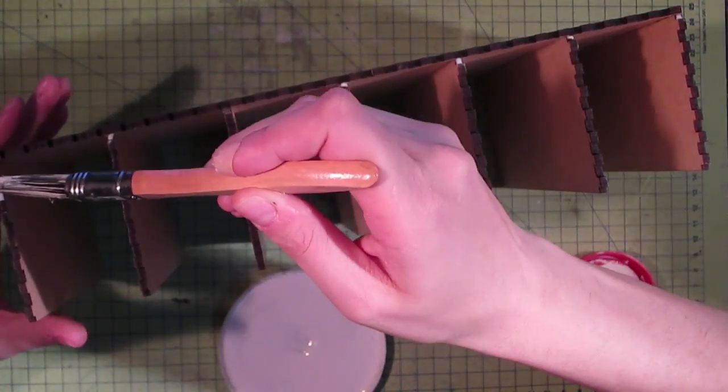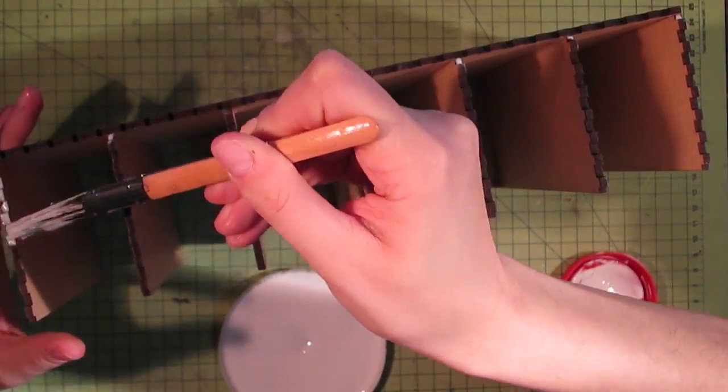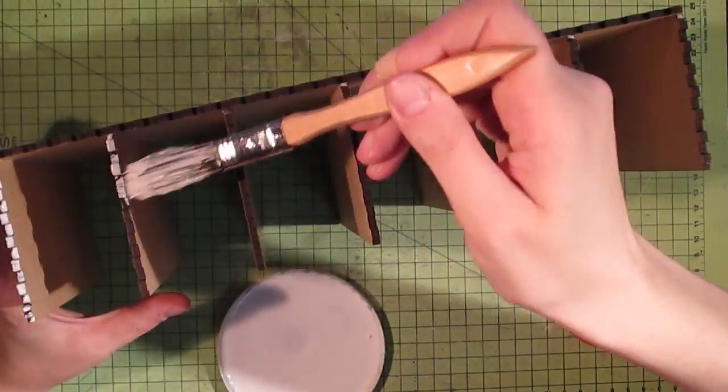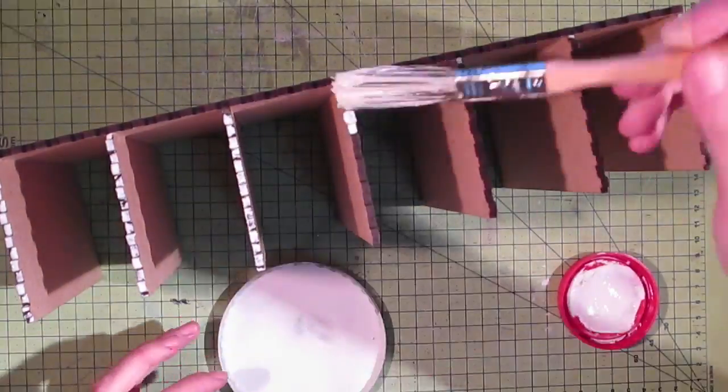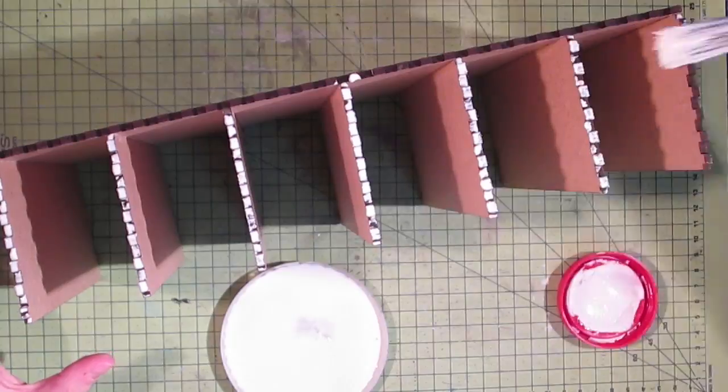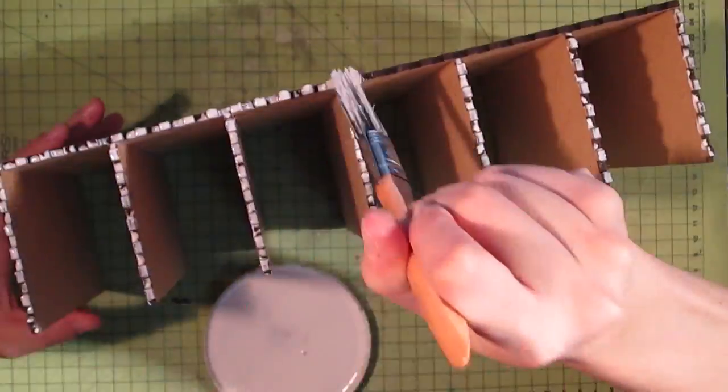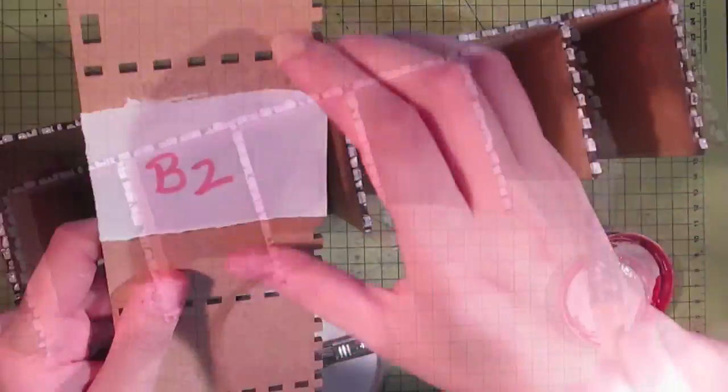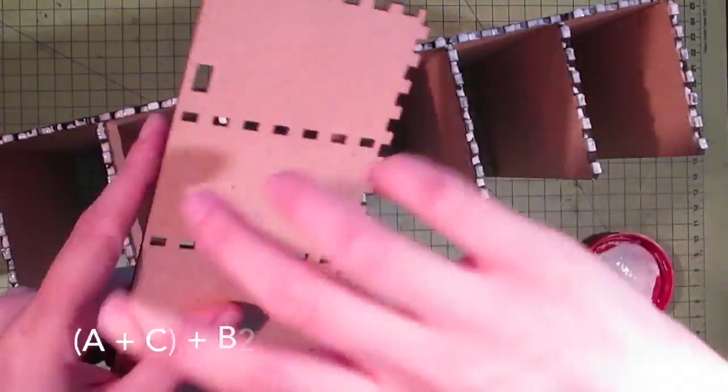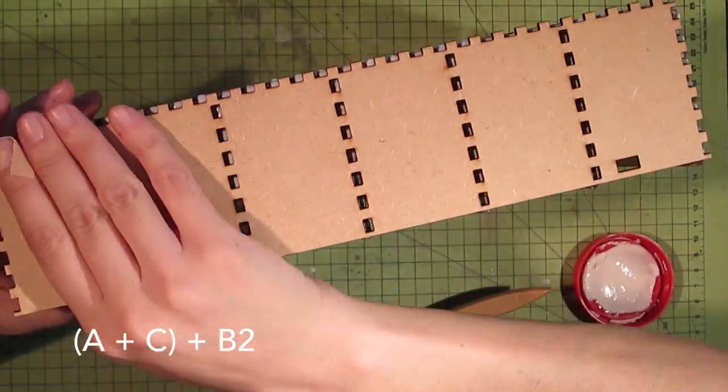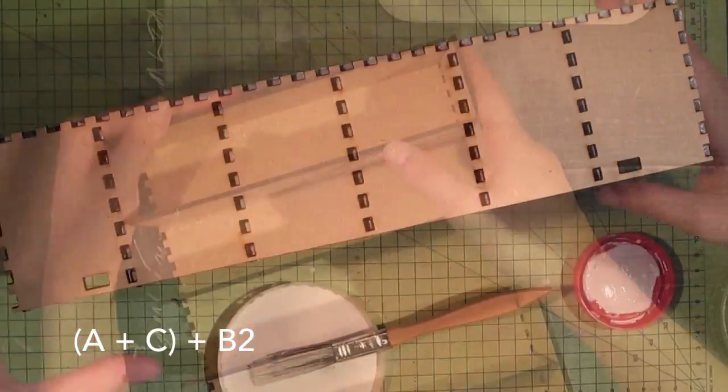And now let's put the glue on the sides. We will add panel B2 being careful and paying attention to the holes because they have to match.